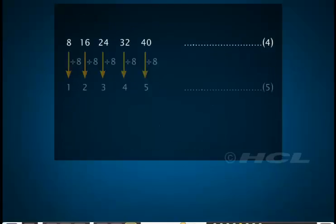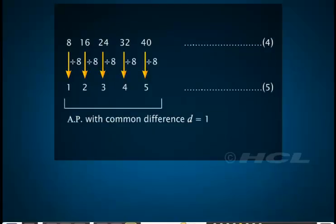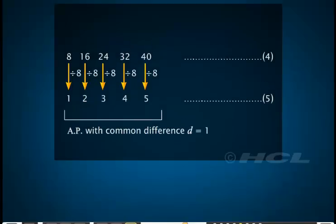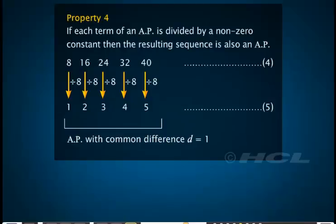Now divide each term of AP 4 by 8 to get a sequence of numbers denoted by 5 as shown. Note that the resulting sequence 5 is also an AP with a common difference 1. We can see that if each term of an AP is divided by a non-zero constant, then the resulting sequence is also an AP.